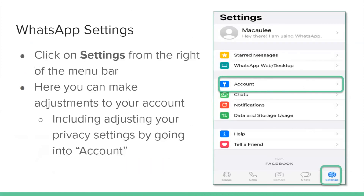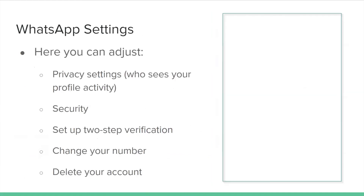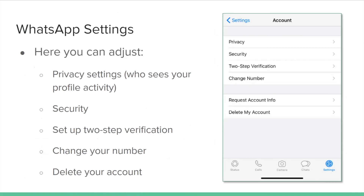Click on Settings from the menu bar to make adjustments to your account, including adjusting your privacy settings by going into Account. Here you can adjust privacy settings, view your profile, activity, and security, set up two-step verification, change your number, or delete your account.